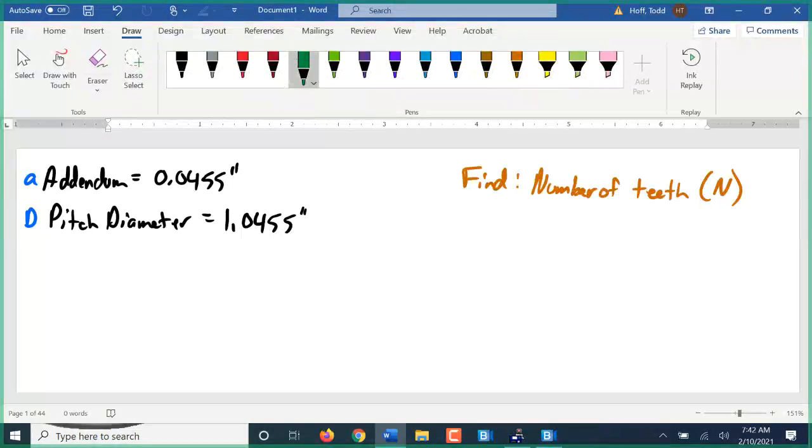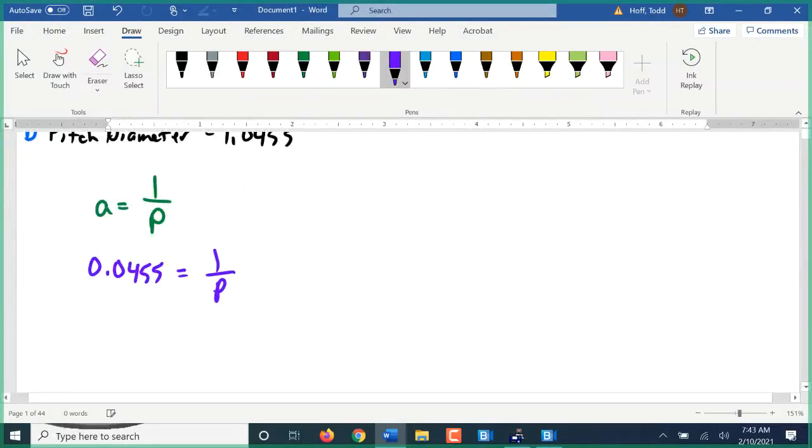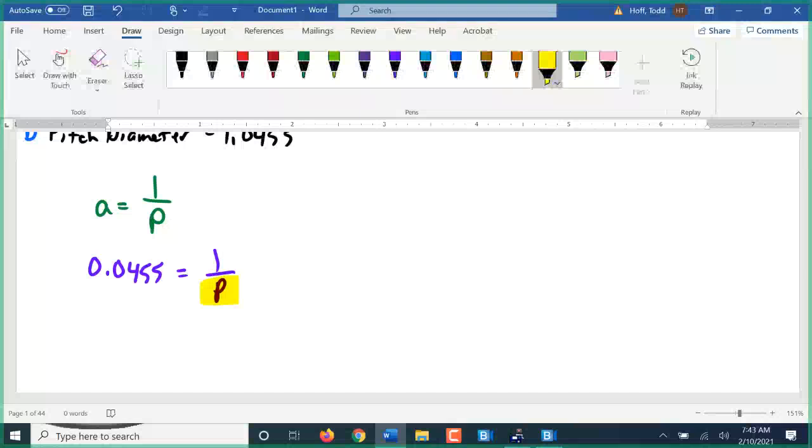We have a formula for the addendum. It says A equals 1 over P, 1 over the pitch. This is the 14 and a half degree involute. We have that A, the addendum is 0.0455. That equals 1 over P. The item we're solving for is on bottom of a fraction. We could multiply by P on both sides, but that's a lot of work.